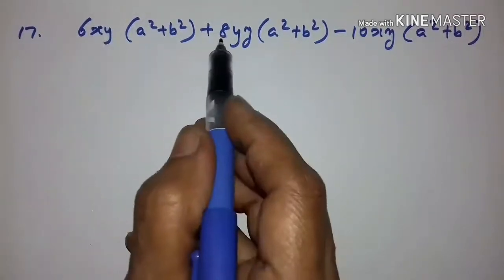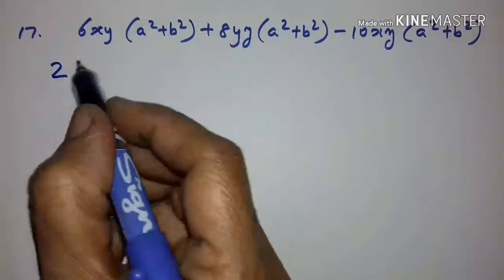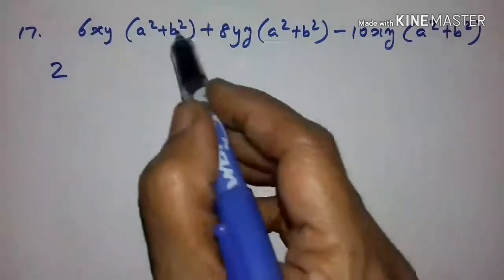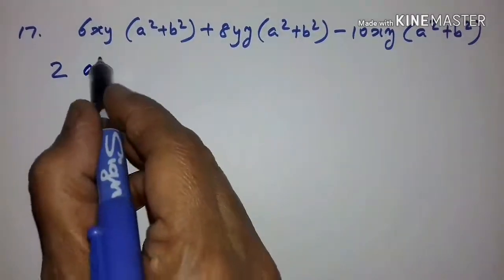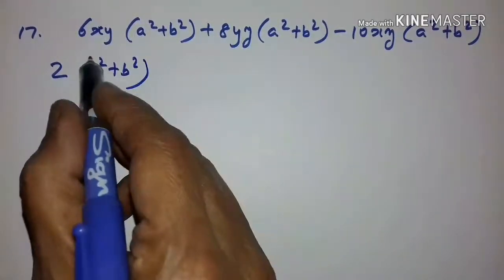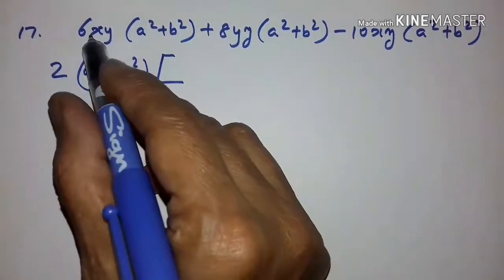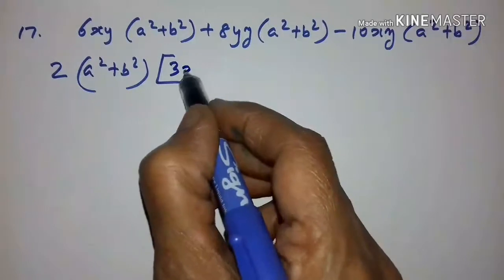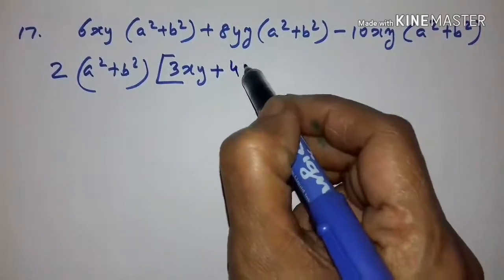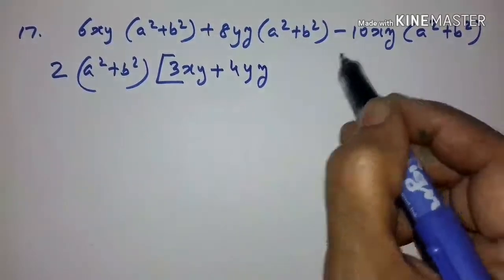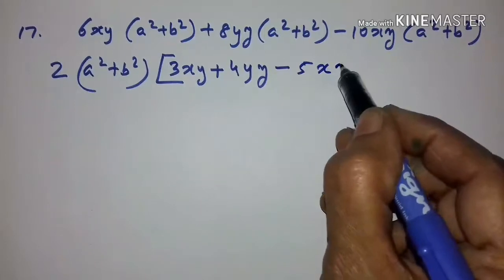In the final problem, the coefficients are 6, 8, and 10, therefore 2 is common. And in all three terms A squared plus B squared is present, therefore A squared plus B squared is common. Taking out 2 times A squared plus B squared, what remains is 3XY plus 4YZ minus 5XZ.